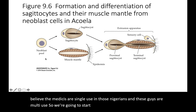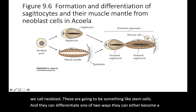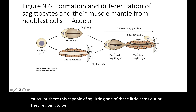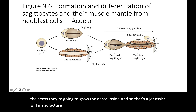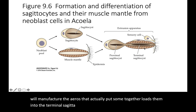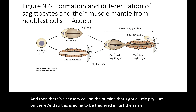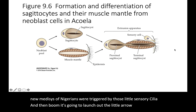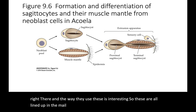You start with a pool of neoblasts — something like stem cells — that can differentiate two ways. They can become a muscle mantle cell, which is a muscular sheath capable of squirting out one of these arrows, or they can become a sagittocyst that actually grows and manufactures the arrows. The sagittocyst loads arrows into the terminal sagittocyst in the muscle mantle. There's a sensory cell on the outside with a little cilium, triggered just like cnidarian nematocysts, and then it launches the little barb.